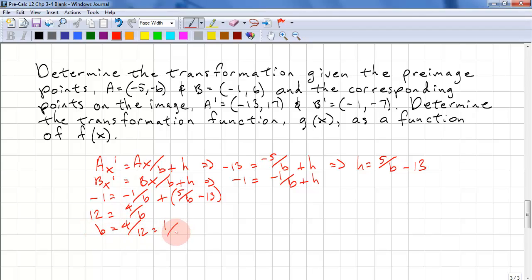And that's 1 third. We need to plug this back into h = 5 over 1 third minus 13. And this is 5 times 3. So 15 - 13. And our answer is 2. So we've solved for b and h.